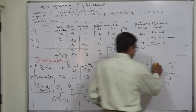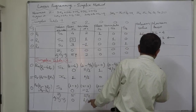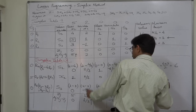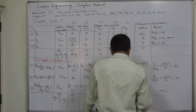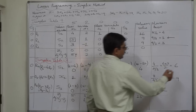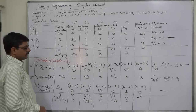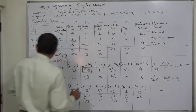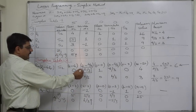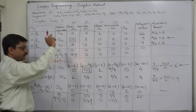Now divide the solution values by the respective elements of the key column. 4 divided by 2/3 equals 4 times 3/2, which is 6. Similarly, 3 divided by 1/3 equals 3 times 3, which is 9. We are not considering 0. The minimum positive ratio is 6, so row R4 is selected as the key row. The common element of the key column and key row is the key element. We will multiply R4 by 3/2, giving us R7, the first row of the next table.